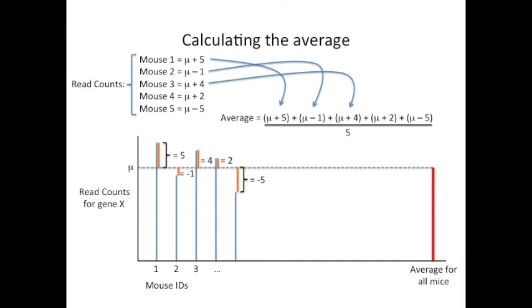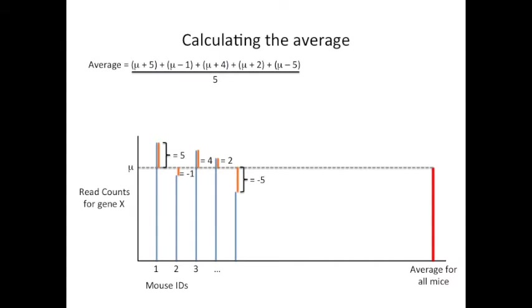To calculate the average, we do what we learned how to do in fifth grade. We add up the five measurements and we divide by five. In this case, the measurements are fancy formulations for read counts. Now I'm going to show you what happens when we shuffle the numbers around a little bit.